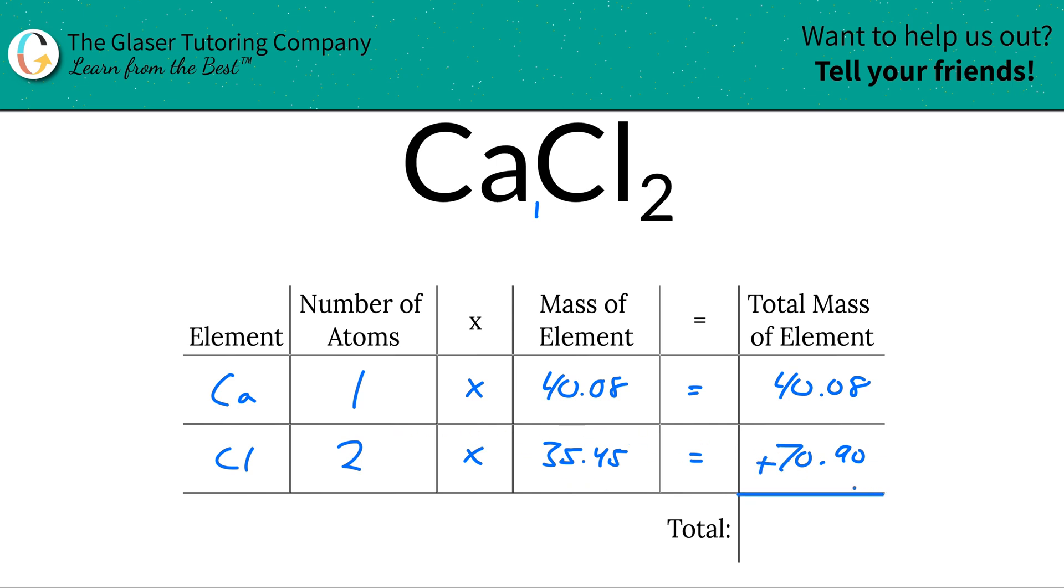Then to find the total, just simply sum this column together. So this works out to be about 110.98. So now that we got that first step out of the way where we have the mass of calcium chloride here.